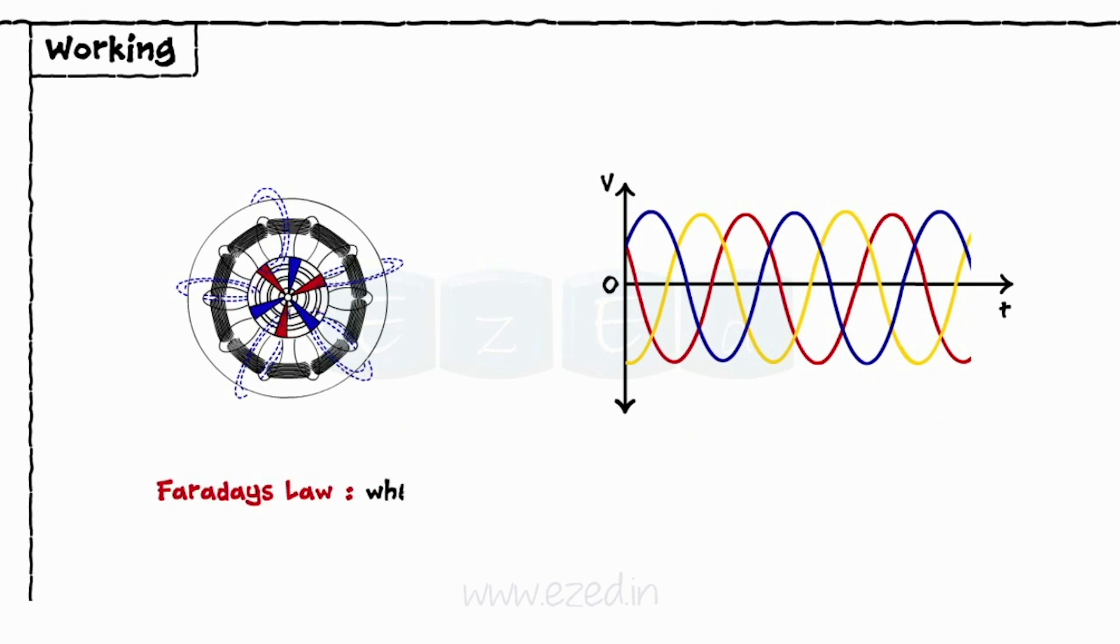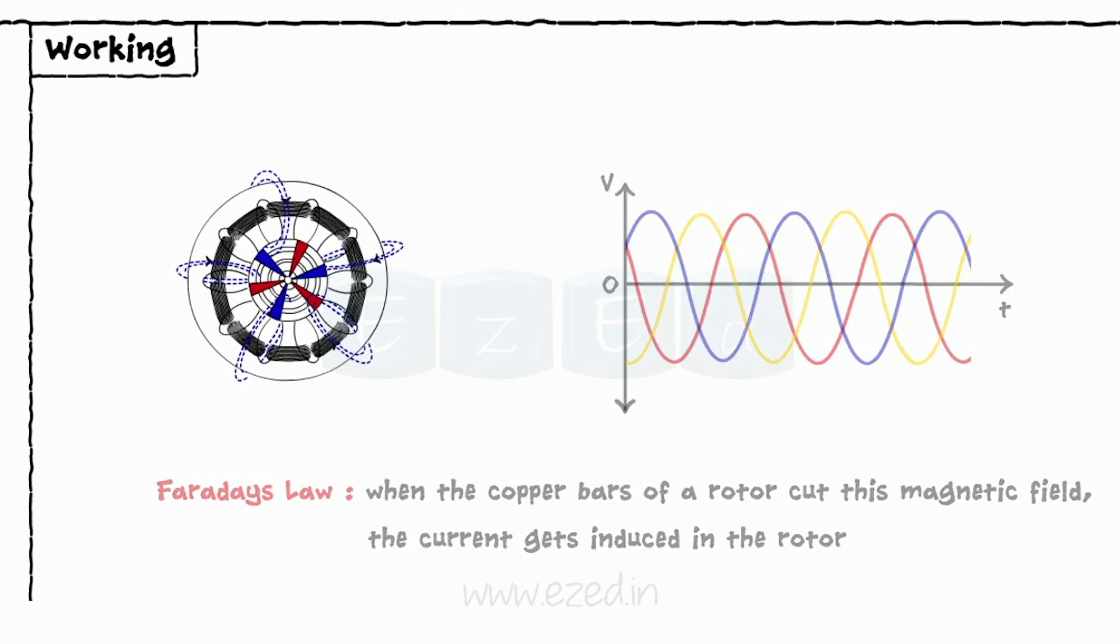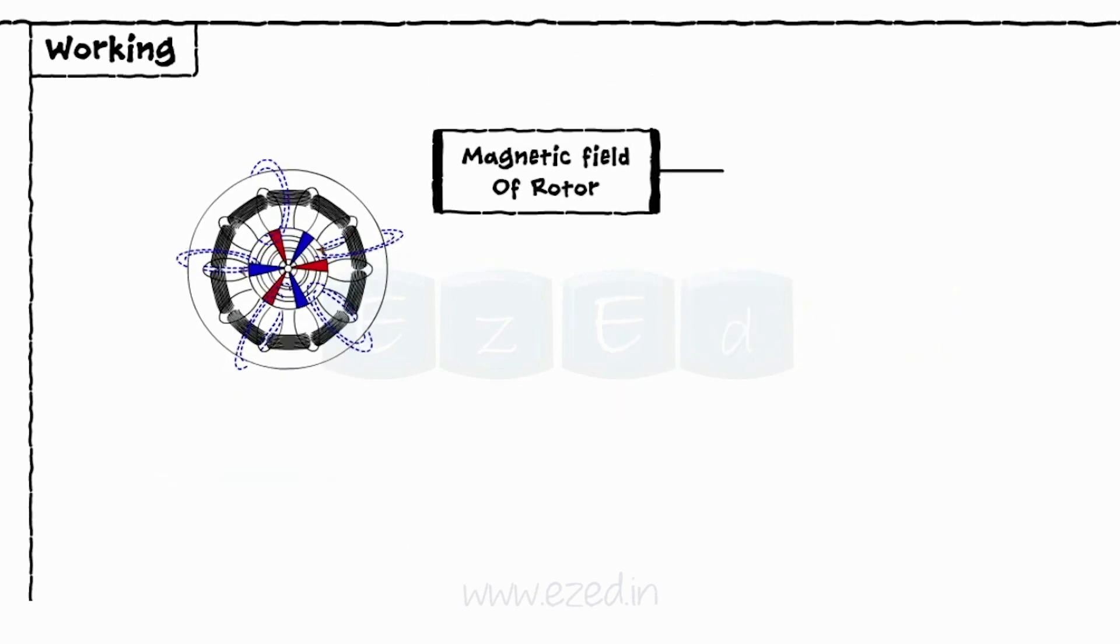According to Faraday's law, when the copper bars of rotor cut this magnetic field, the current gets induced in the rotor. This induced current develops the own magnetic field of rotor.